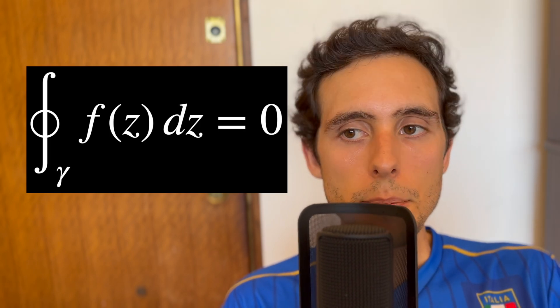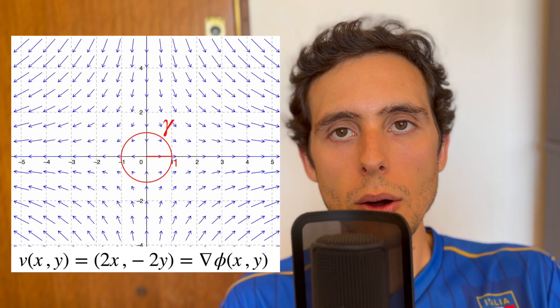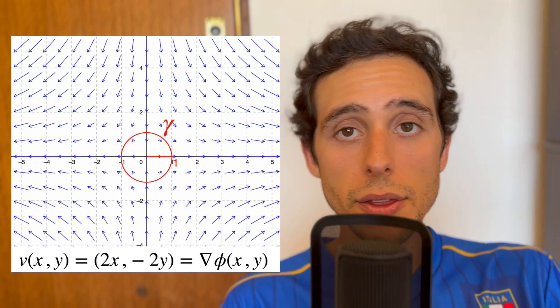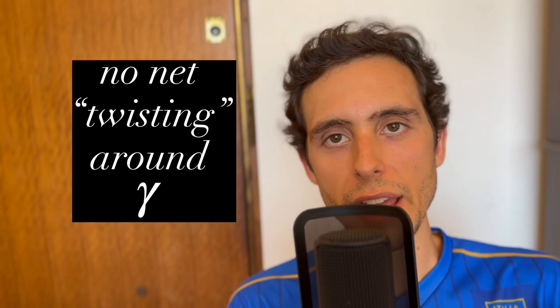So Cauchy's theorem here implies that the circulation around the curve gamma of this type in the flow field is zero. The circulation is defined as the line integral of the velocity field around gamma. For such a rotational flow, we say that there is no net twisting motion around the curve gamma.